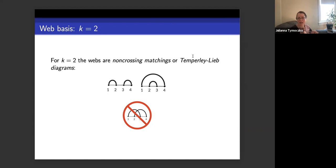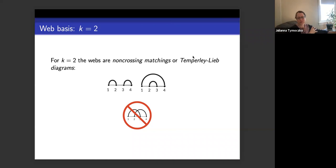We're going to look at k equals 2, then say a little about k equals 3, and beyond that there are deep mysteries. When k equals 2, the webs are non-crossing matchings — called Temperley-Lieb diagrams in knot theory. A matching pairs the numbers 1 through n perfectly; I draw arcs between paired numbers. If arcs cross, it's not a non-crossing matching; if they don't cross, it is. So just think about those non-crossing ones.